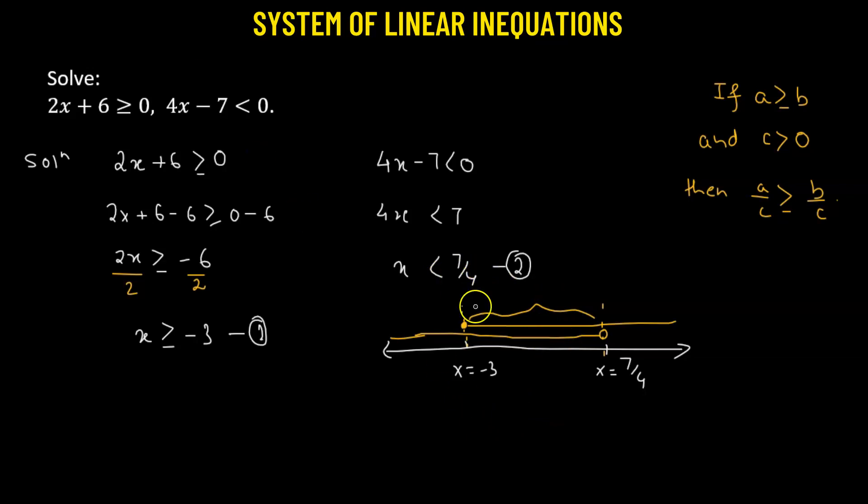So if we write this in our interval form, then we have negative 3 going to 7 over 4. So 7 over 4 is not a part of the solution, so we'll use an open interval. Whereas x equals to negative 3 is a part of the solution, we'll use a closed interval. So this is the solution to our system of linear inequality.